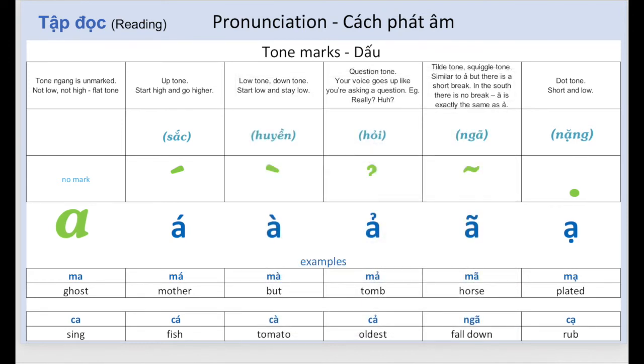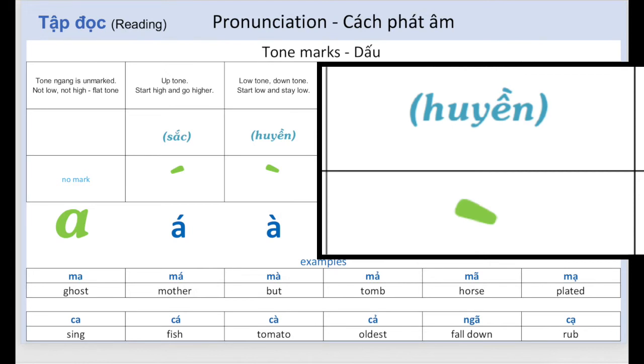Huyền is a low tone, down tone. Start low and stay low. A. A. Examples: Mà, Cà.